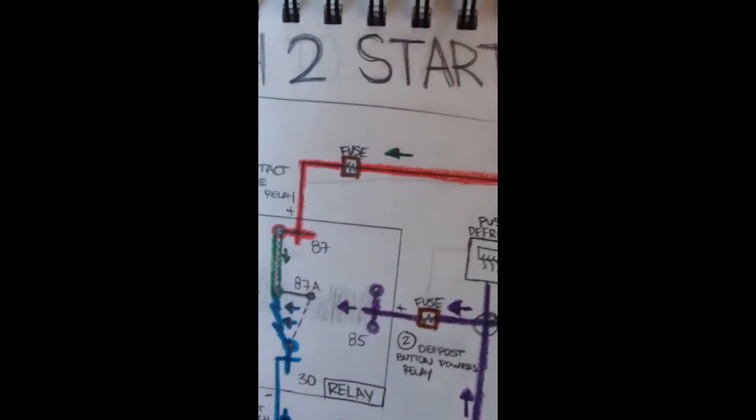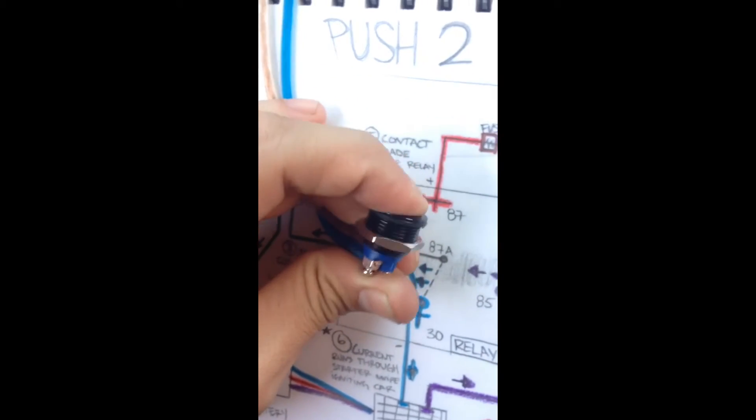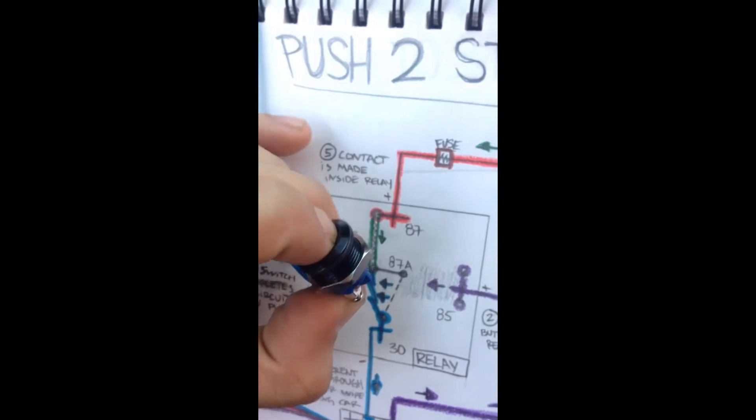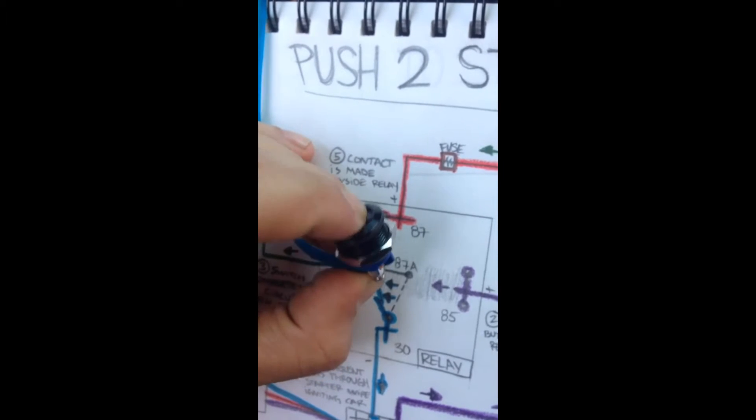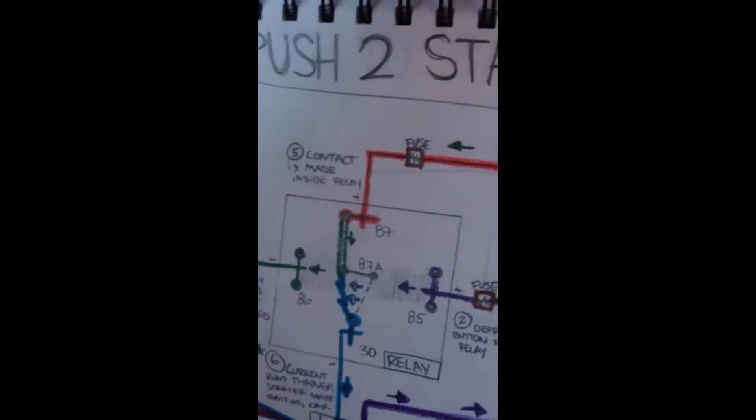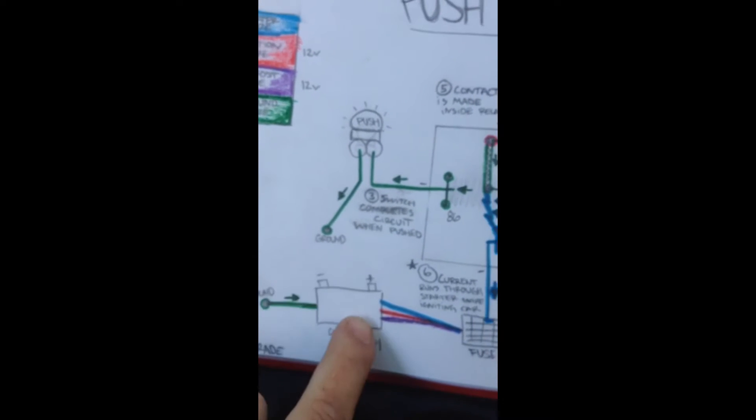And as soon as your power gets to your switch, which I have right here, gets to your switch, this stops the circuit. As soon as you push it, it completes it. Stop it, completes it. Stop it, completes it. So when you complete it, it lets ground run through your battery and lets power.